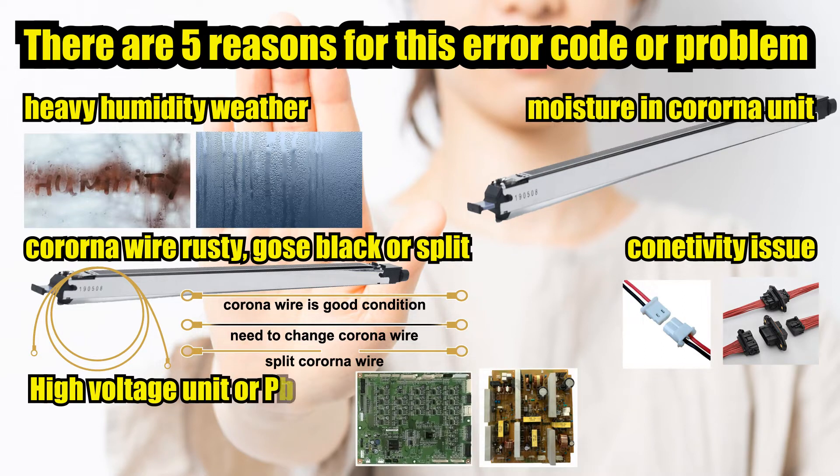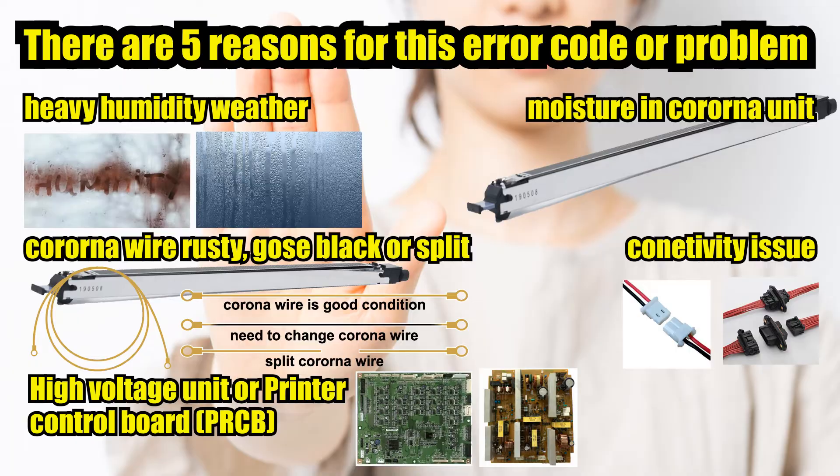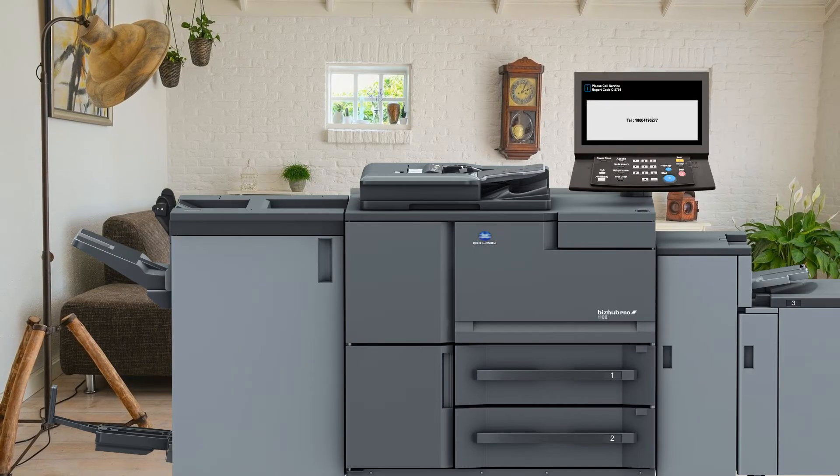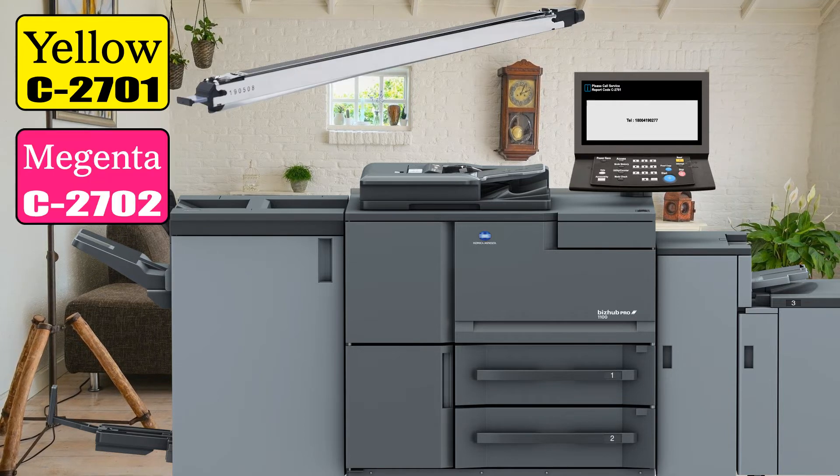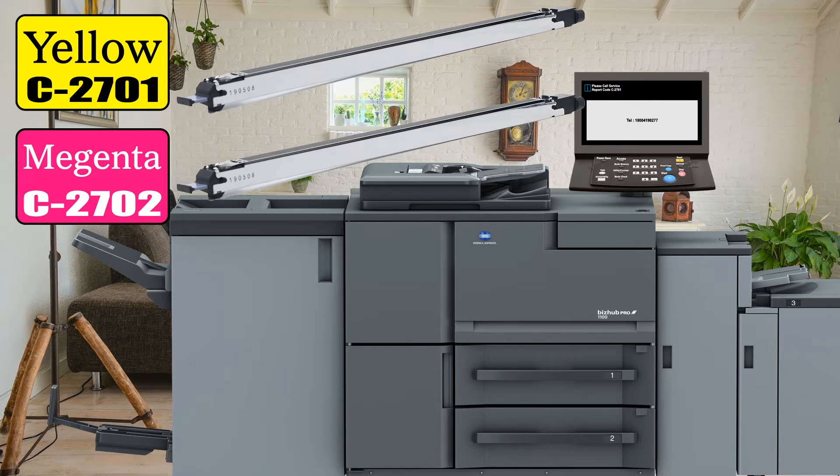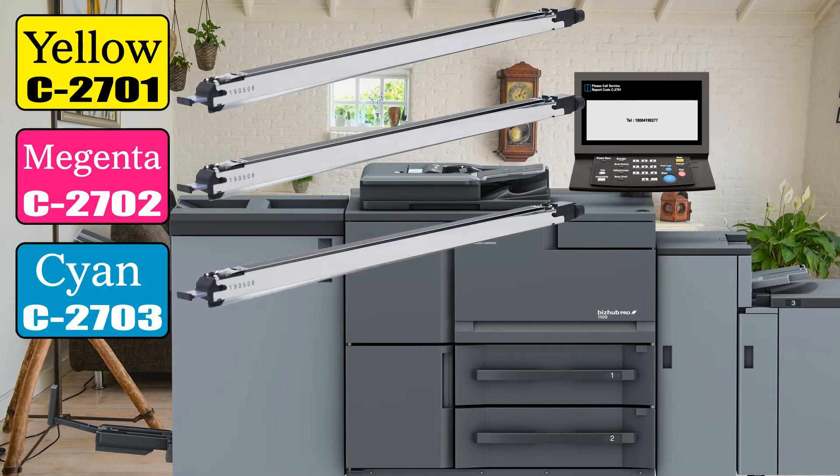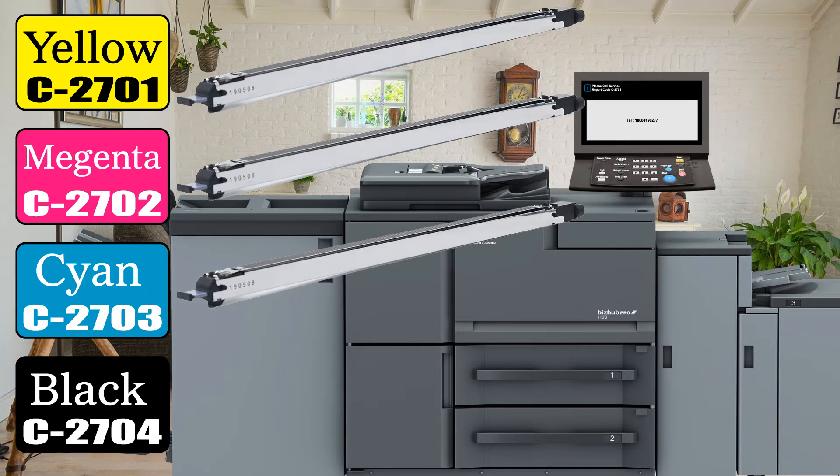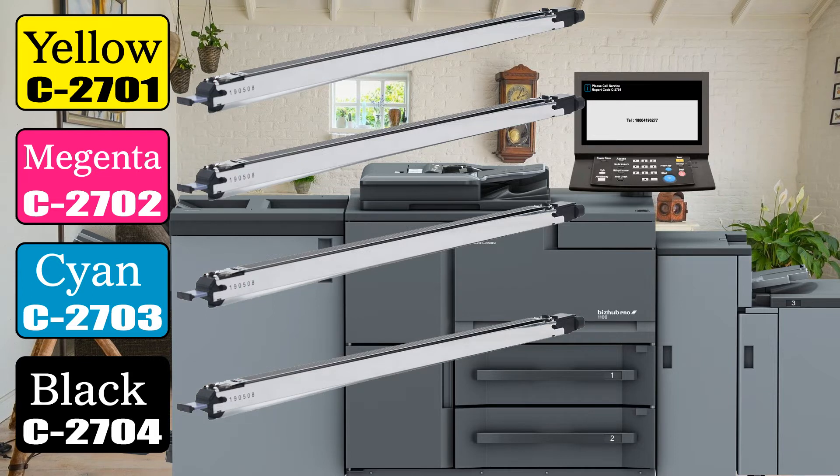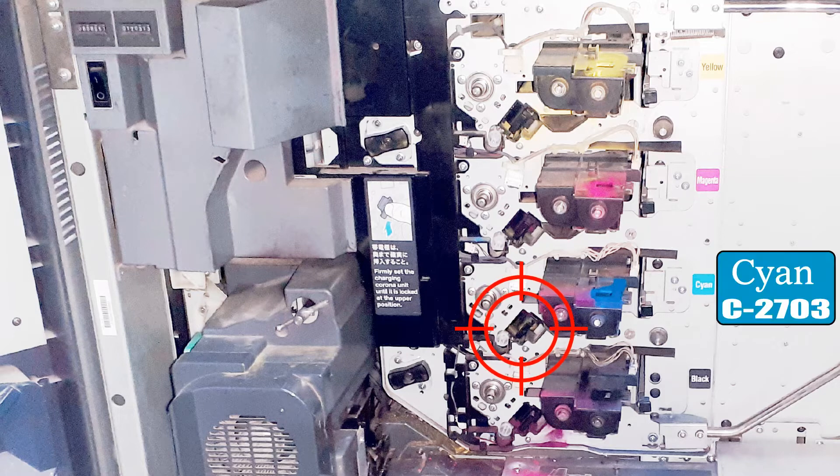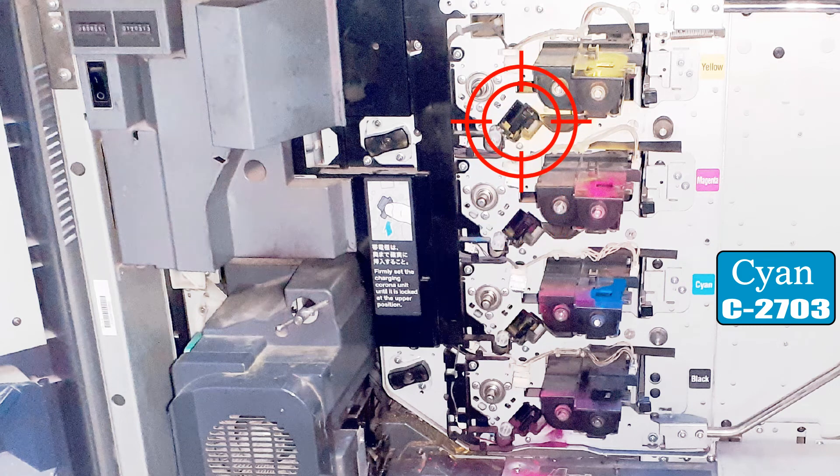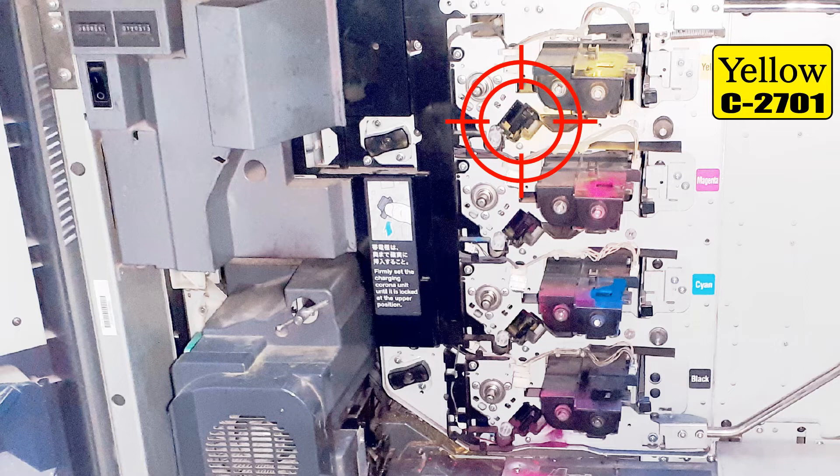Now let's fix this error. First we understand these error codes: 2701 means charging corona yellow not working, 2702 means charging corona magenta not working, 2703 means charging corona cyan not working, 2704 means charging corona black not working. First we have to interchange corona units. For example, if machine shows error code 2703, then we change cyan charging unit to yellow charging unit and restart machine. If error code changes to 2701, it means the corona unit present on yellow is faulty.